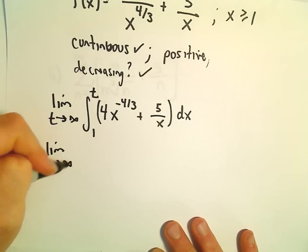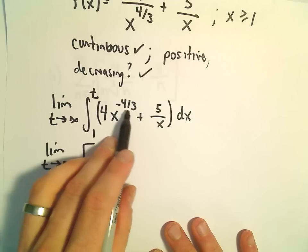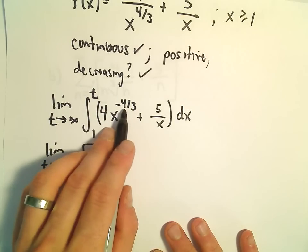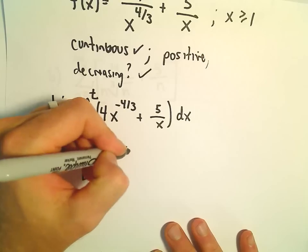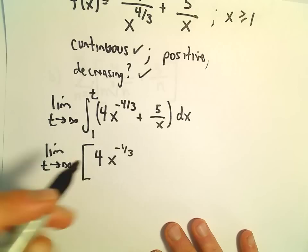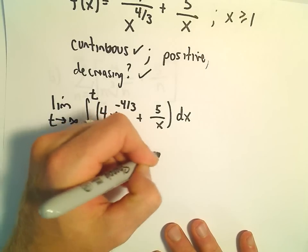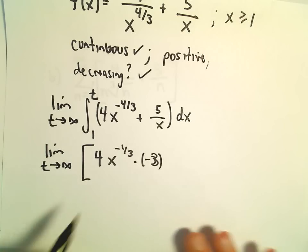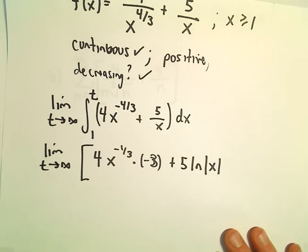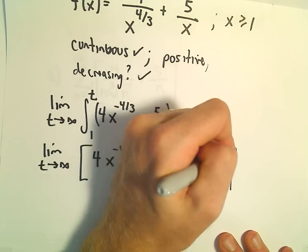So we've got the limit as t goes to infinity. We would have 4 times x to the, well let's see, we would have to add 1. So if we add, we'll get, so we'll add 3 over 3, so that'll leave us with negative 1 over 3. And then we'll have to divide by negative 1 over 3, which is the same as multiplying by negative 3. And then we also have 5 times the function, the natural logarithm of x. And again, this will be from 1 to t.